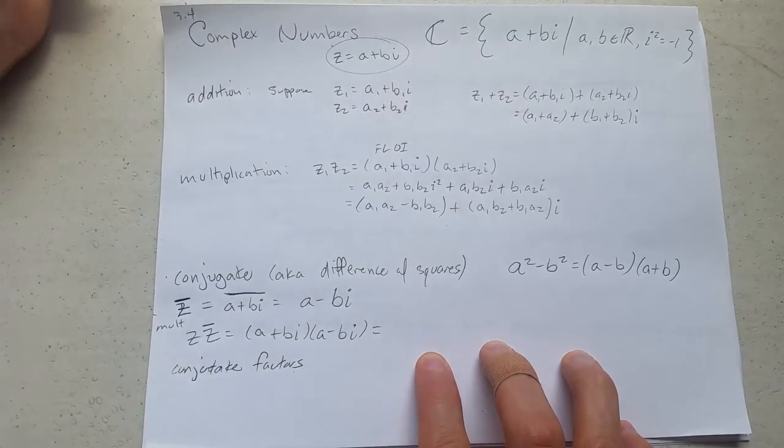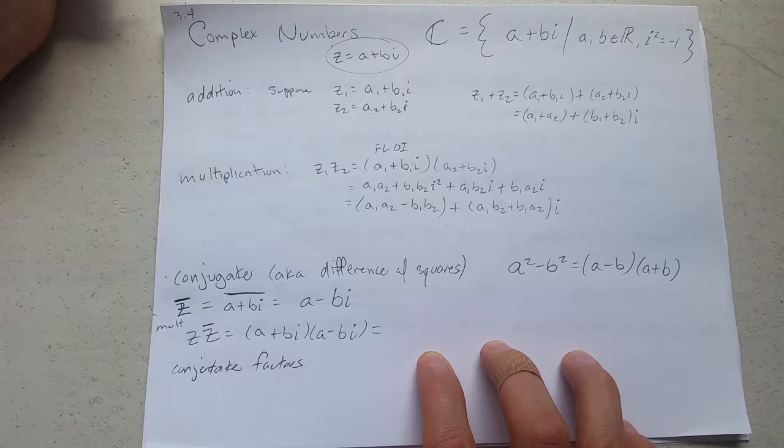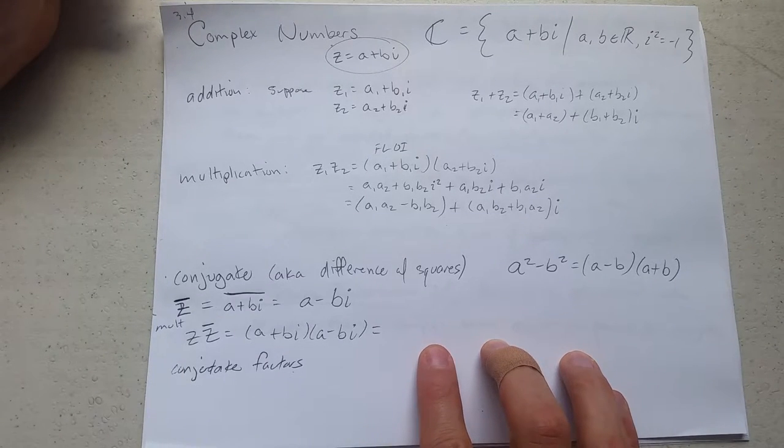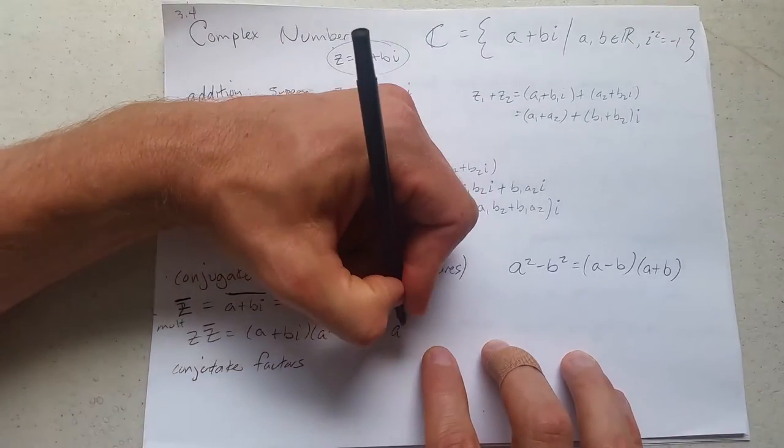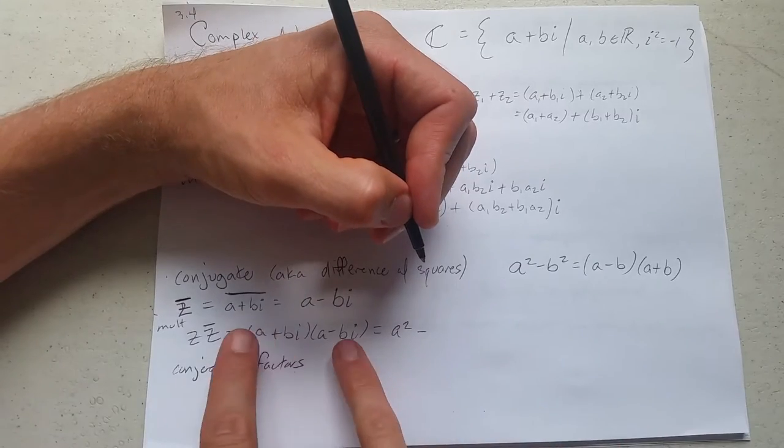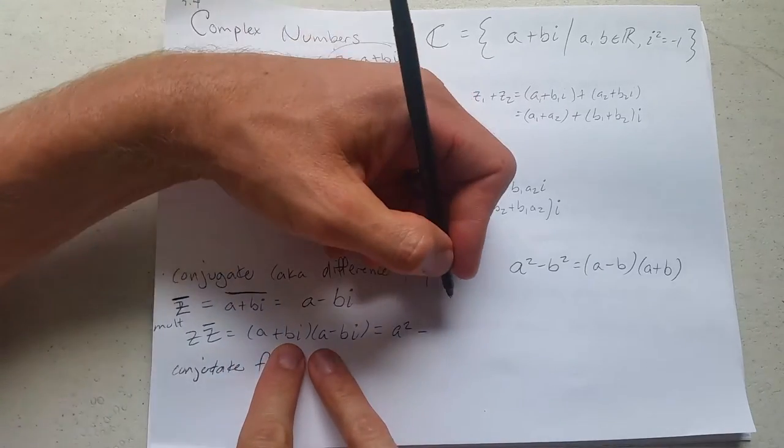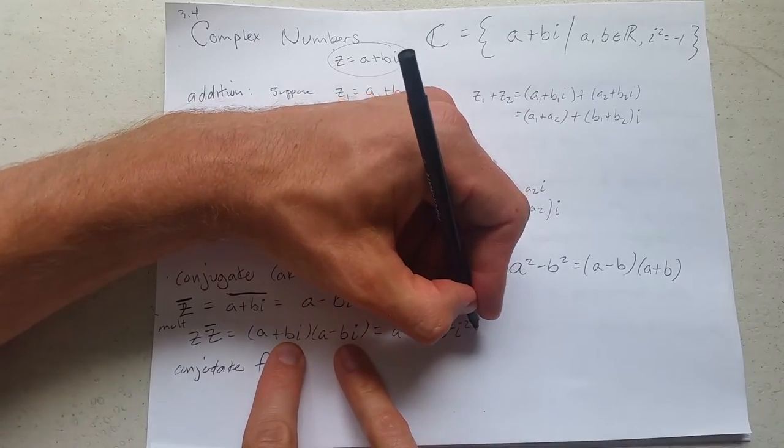Now I could FOIL. However, when you multiply conjugates, the outside inside terms are going to cancel out. So we can save a little time. We get a times a is a squared minus, outside inside terms are going to cancel. We're going to go straight to last b squared, i squared.